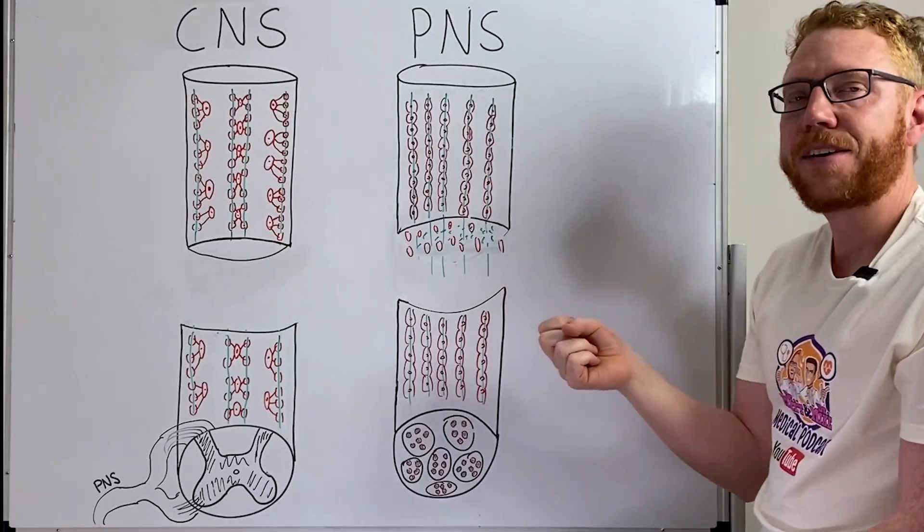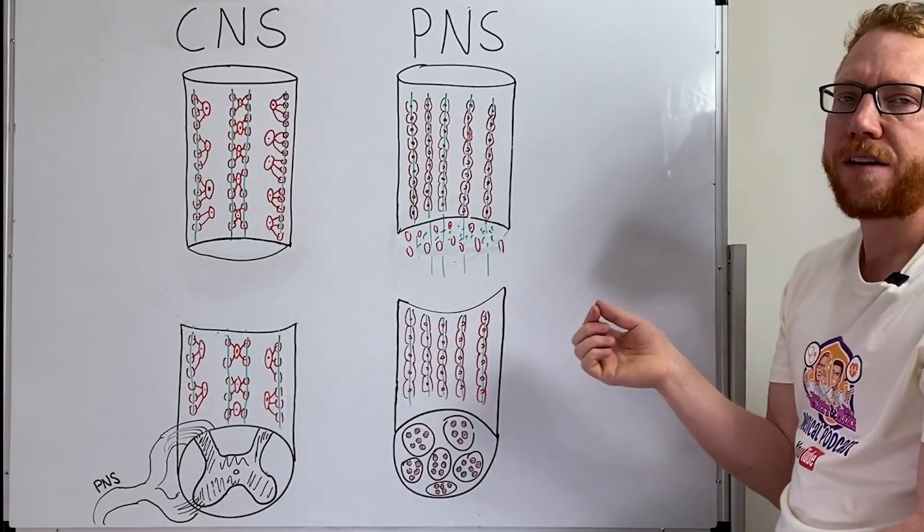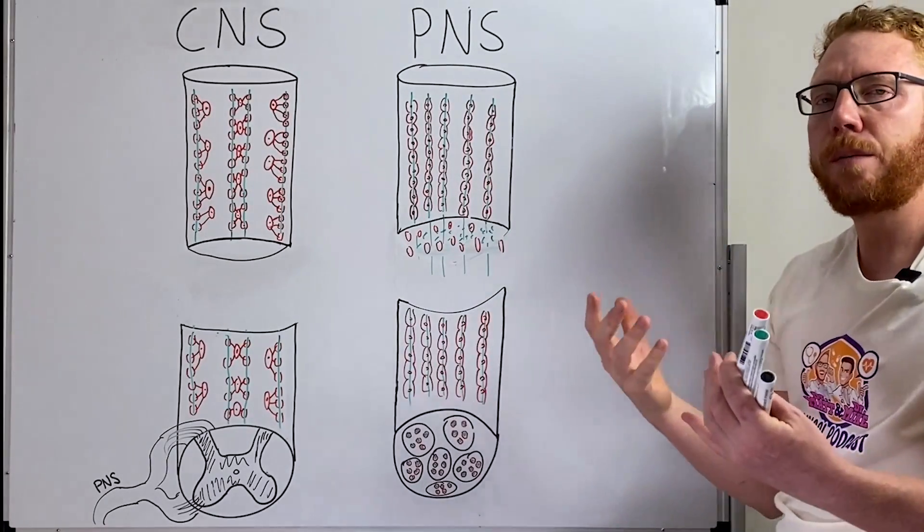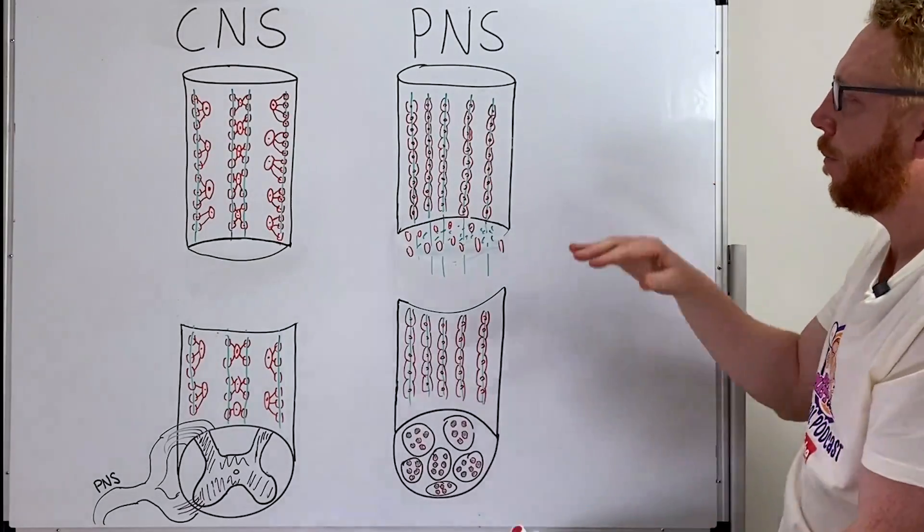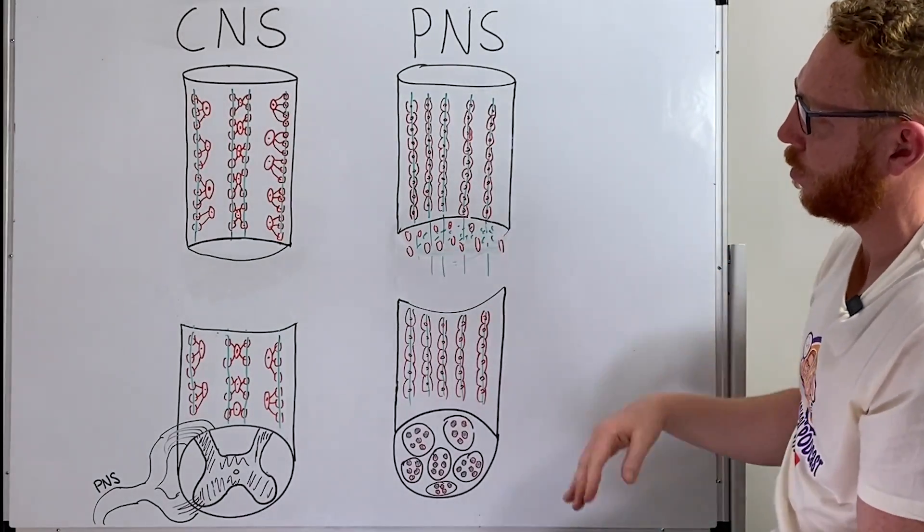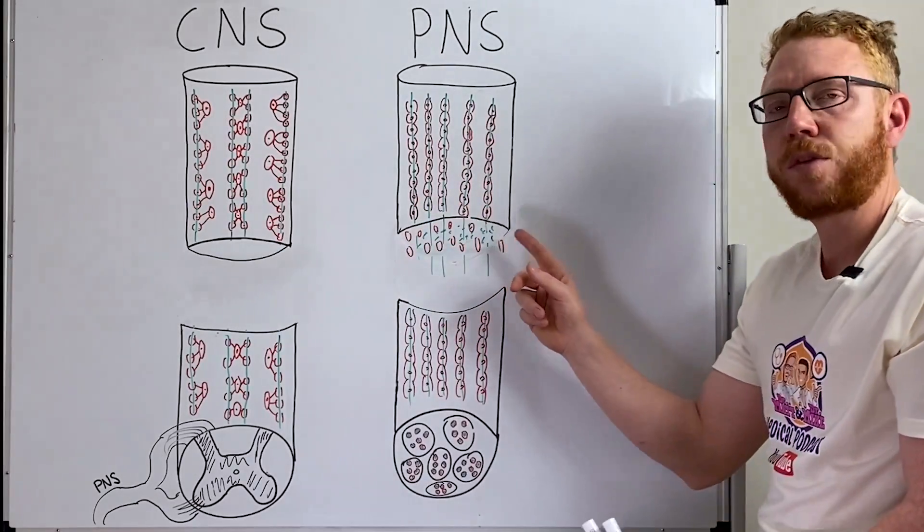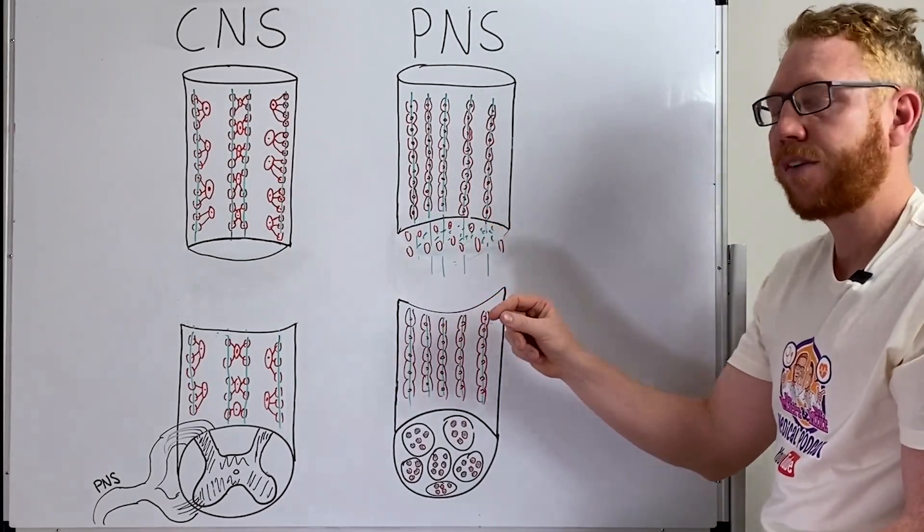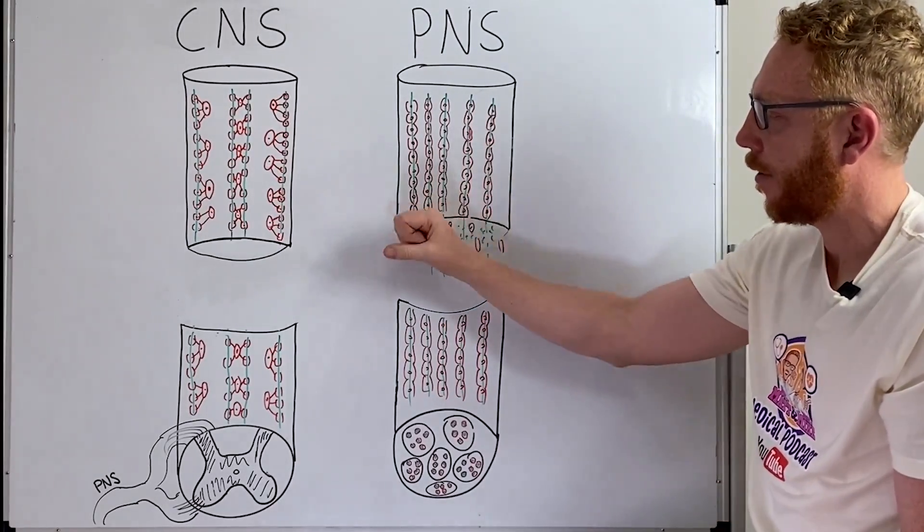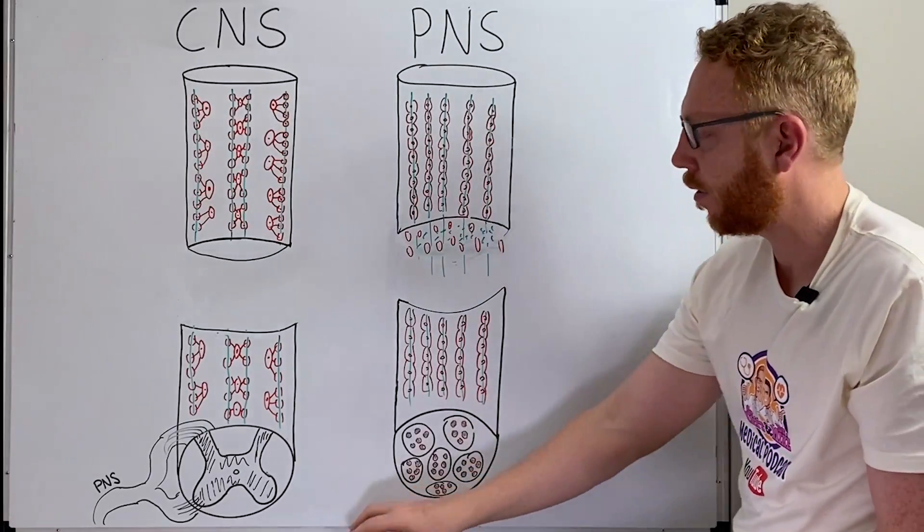They will start to clean that up but they will also signal to their friend in the blood called macrophages. These are big Pac-Man that will come from the blood into this area and start to clean it all up. And so both the Schwann cell and the macrophage will start to clean the area up which is very important for the regeneration.